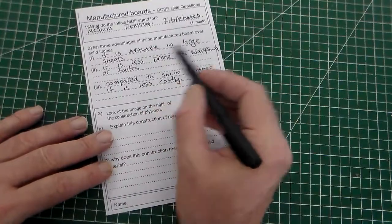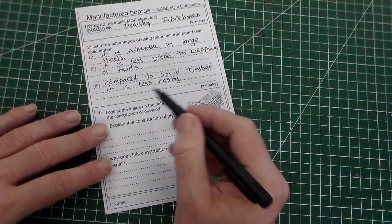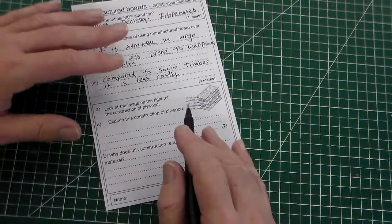So, there's the three. Available in large sheets, less prone to warping or faults. Compared to solid timber, it is less costly.